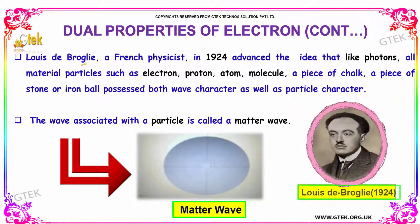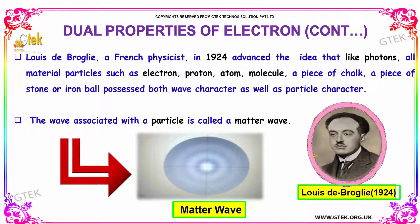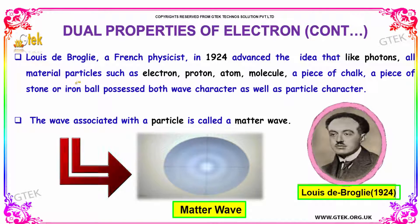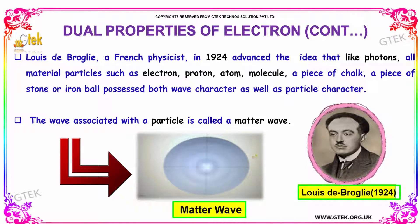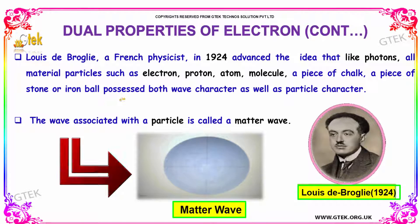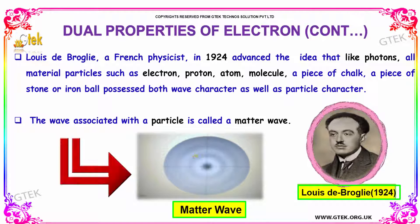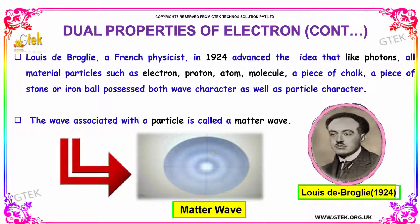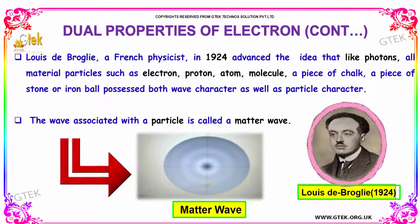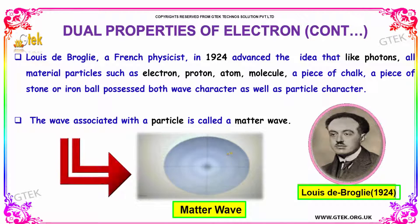Louis de Broglie, a French physicist, in 1924 advanced the idea that, like photons, all material particles such as electrons and protons, atoms and molecules, a piece of chalk, a piece of stone, or an iron ball possess both wave character as well as particle character. The wave associated with a particle is called a matter wave.